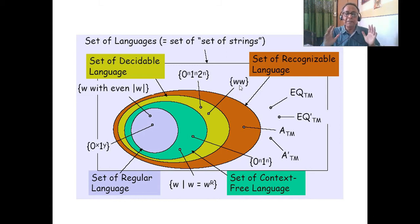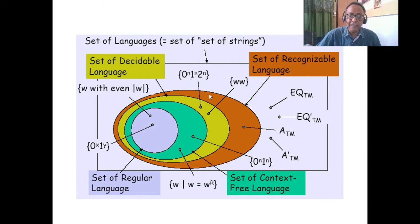You should always remember the sample language for each area. Like WWR is a context-free grammar but WW is context-sensitive.